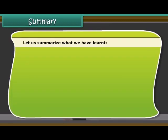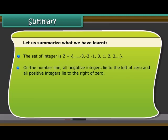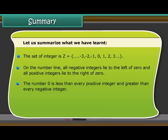Let us summarize what we have learned. The set of integers is Z, which is equal to minus 3, minus 2, minus 1, 0, 1, 2, 3. On the number line, all negative integers lie to the left of 0 and all positive integers lie to the right of 0. The number 0 is less than every positive integer and greater than every negative integer.